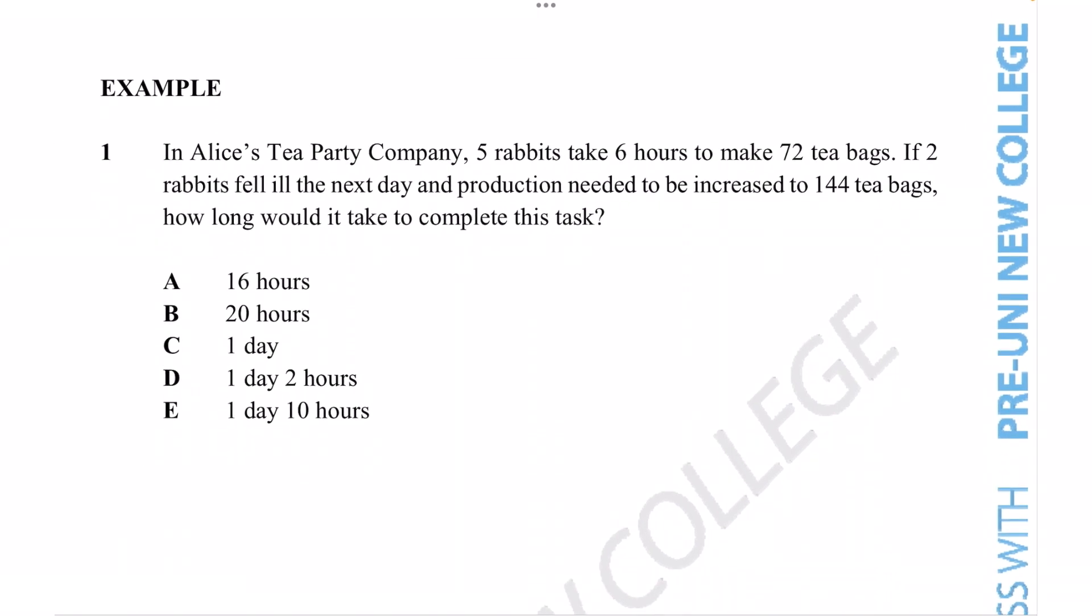In this question, we have Alice's tea party company where rabbits are making some tea bags and we're given the rate where five rabbits take six hours to make 72 tea bags. Now, unfortunately, it looks like two of the rabbits have fallen ill the next day, but production needed to complete 144 tea bags. In this scenario, how long would it take to complete this task?